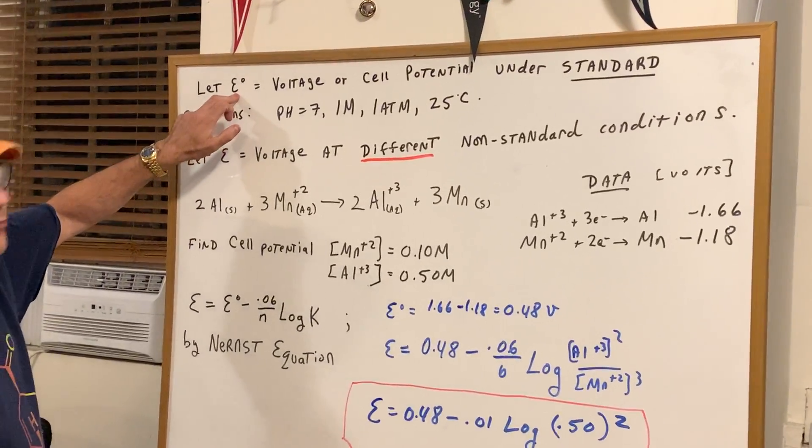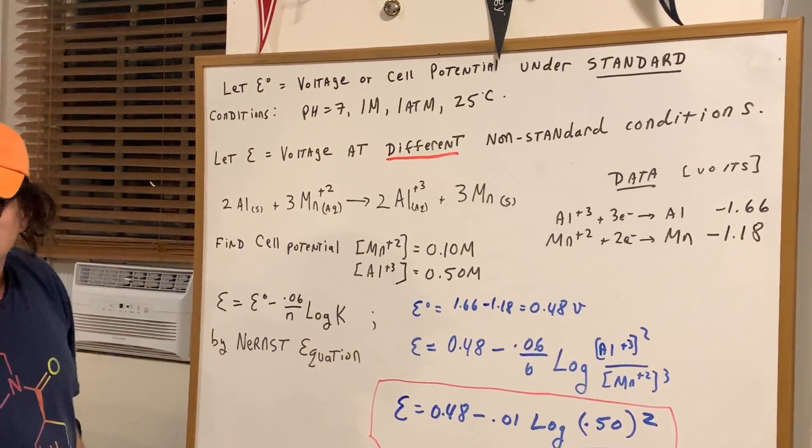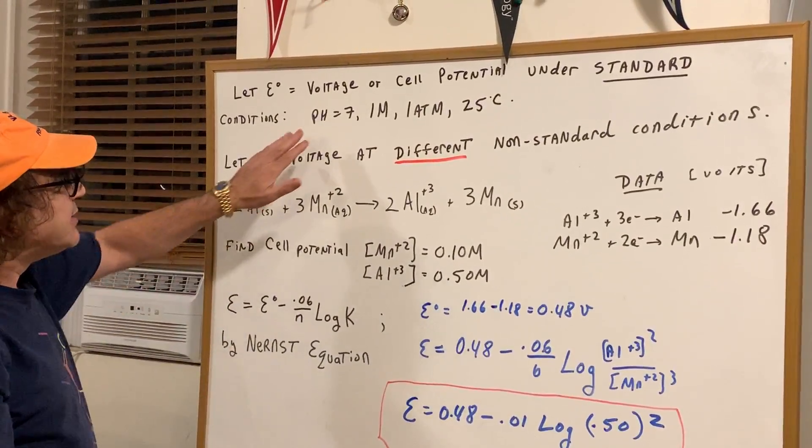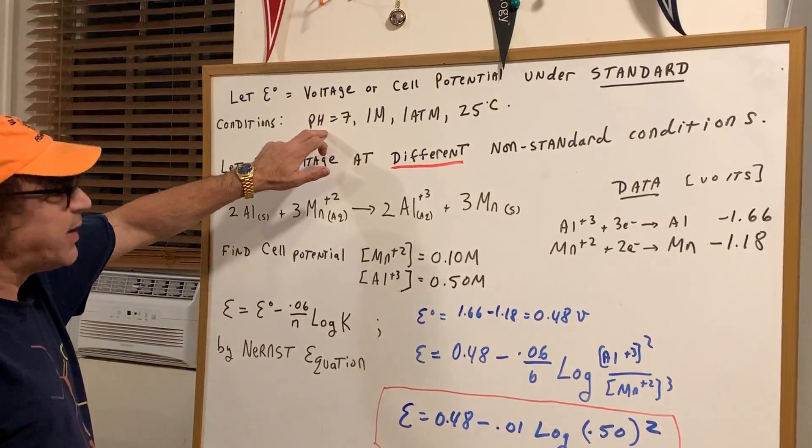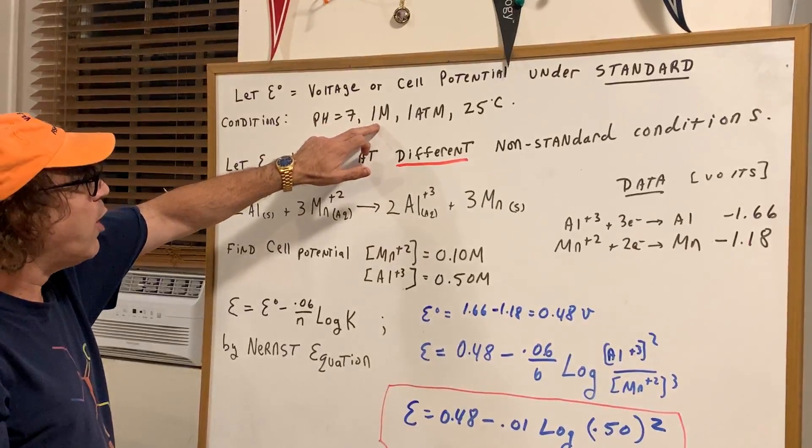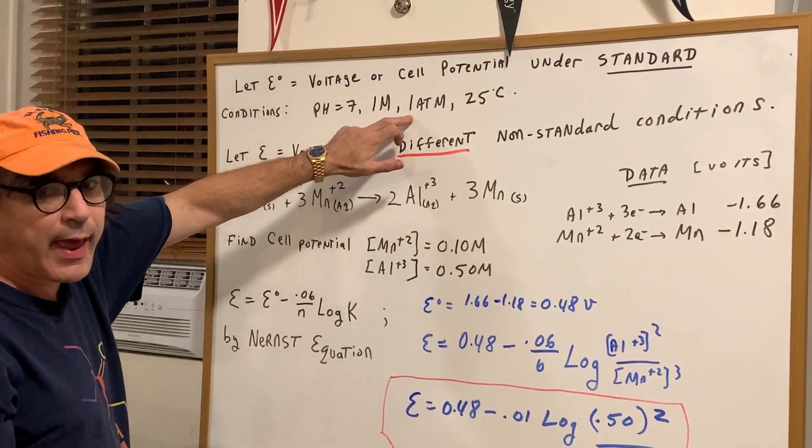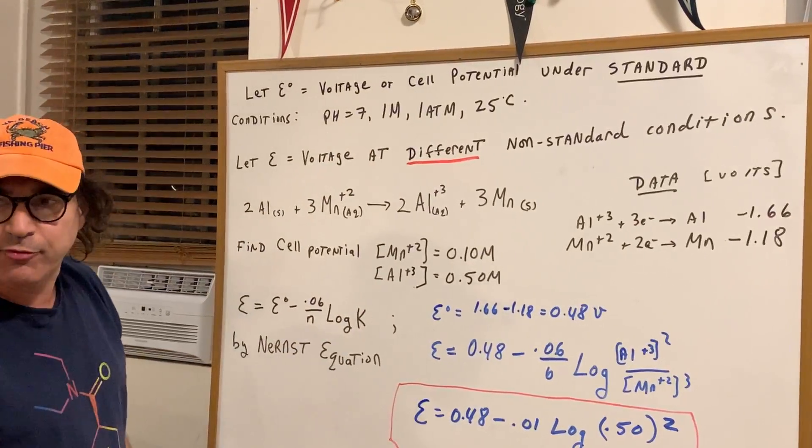We're going to learn E0 if you remember from the last class, that's the voltage of the cell potential under standard conditions. Now when I say standard conditions it means the pH is 7, all concentrations are at 1 molar, pressure is at 1 atmosphere and we're at 25 degrees Celsius.